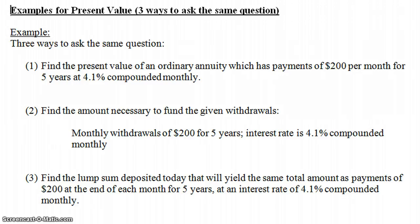For example, there's really three different ways to ask the same type of question, three different ways that MyMathLab uses anyway. One way is like this: Find the present value of an ordinary annuity, which has payments of $200 per month for five years at 4.1% compounded monthly.